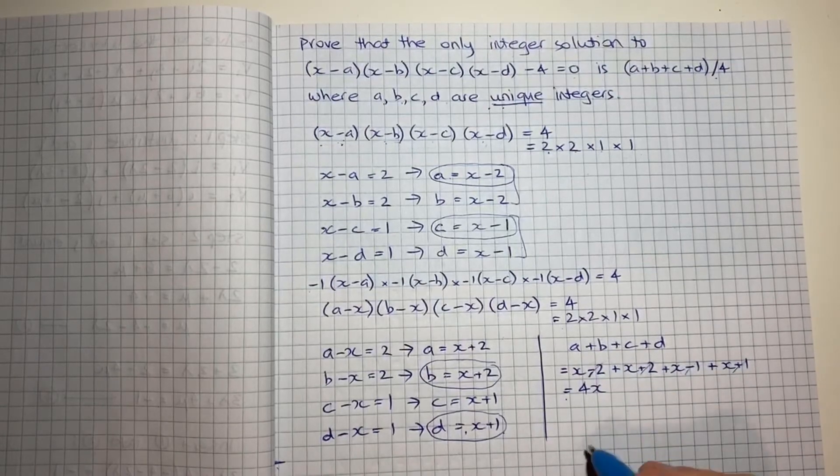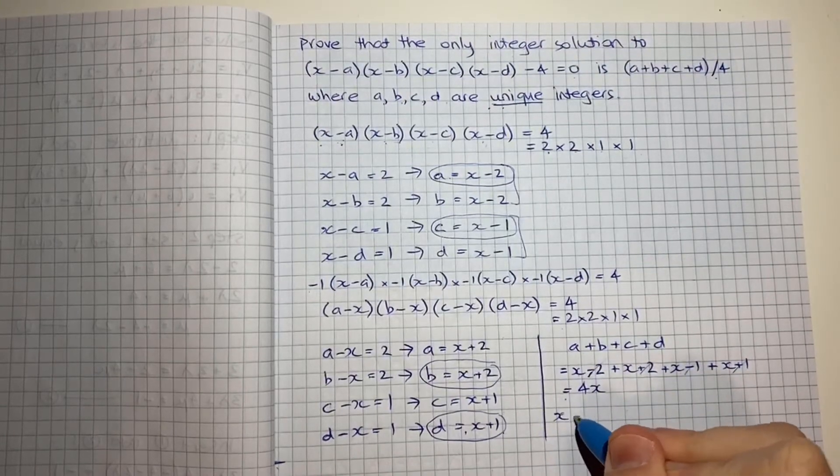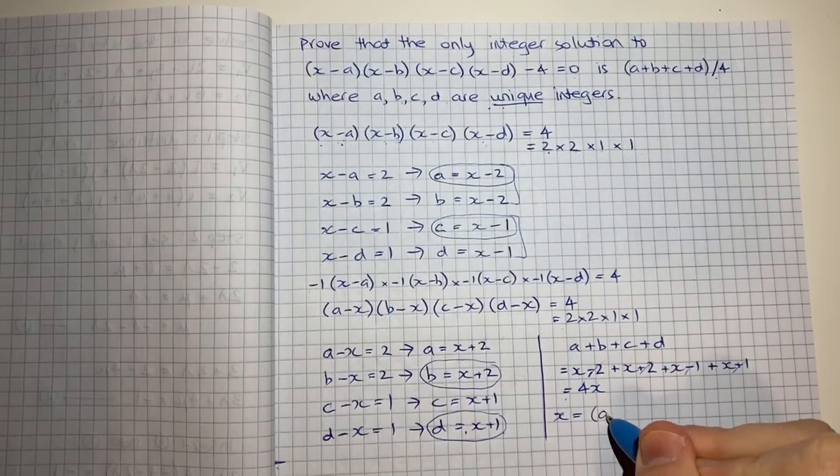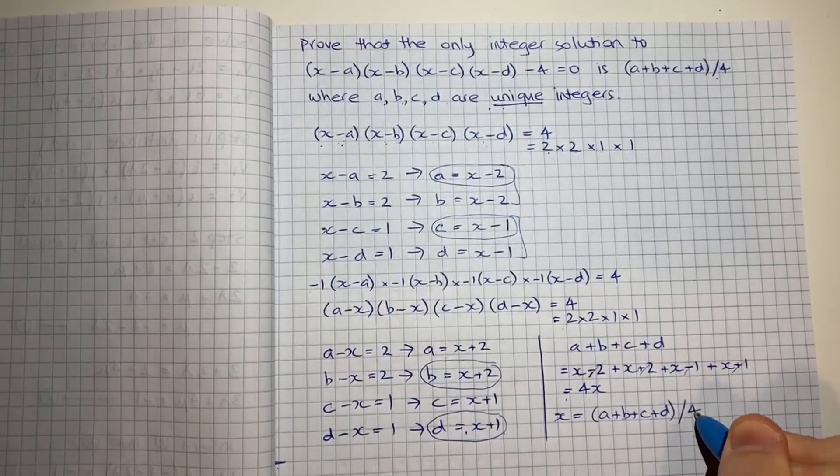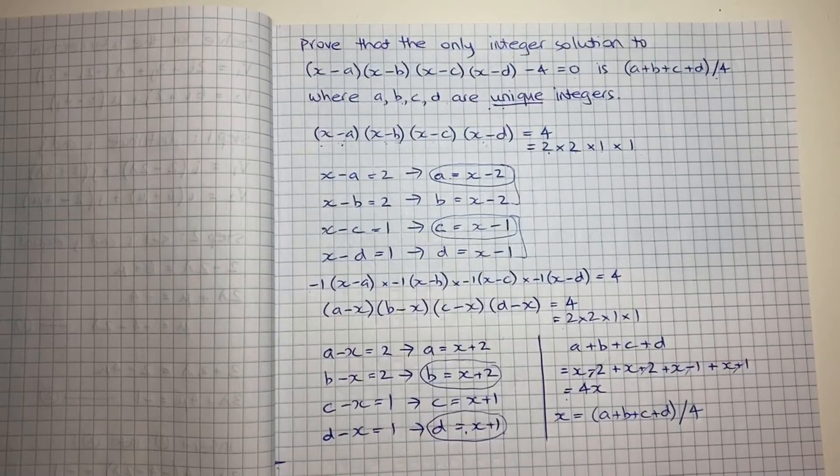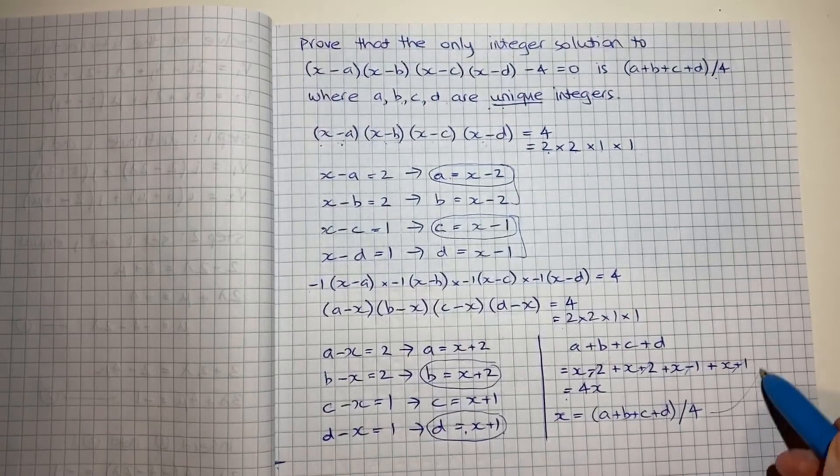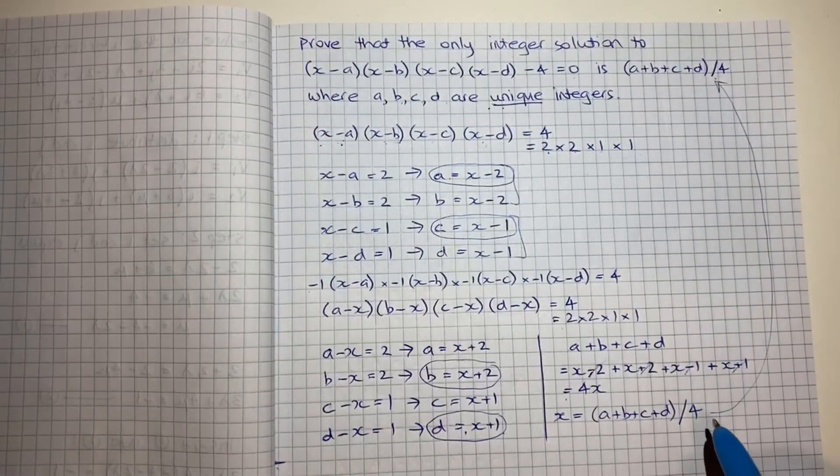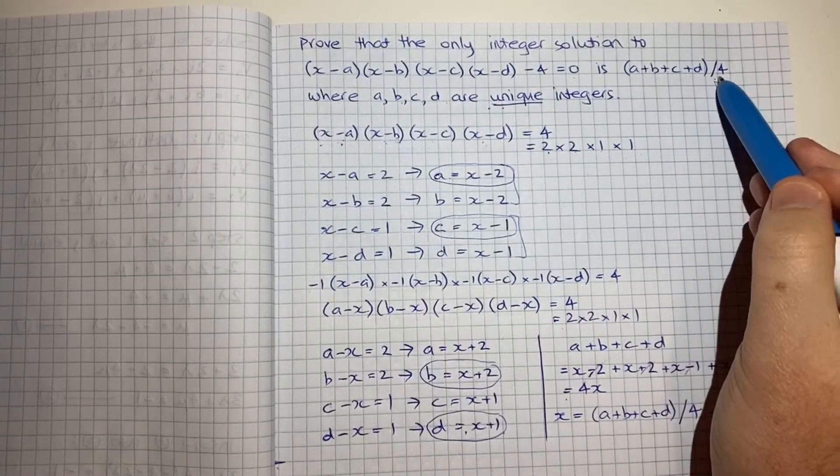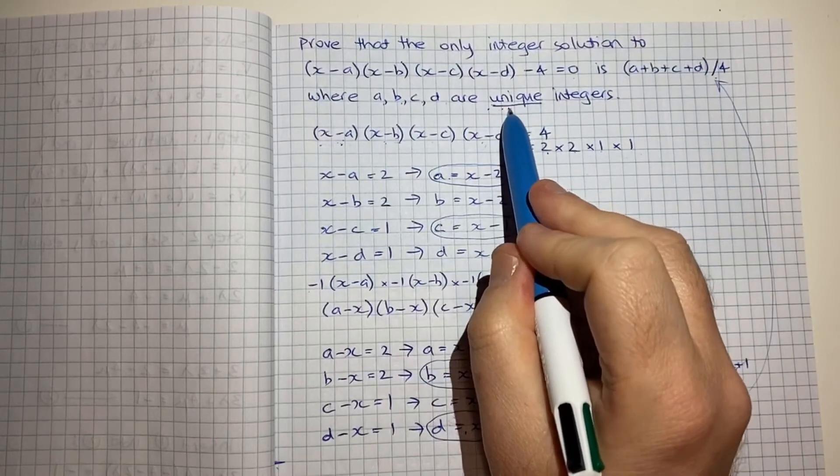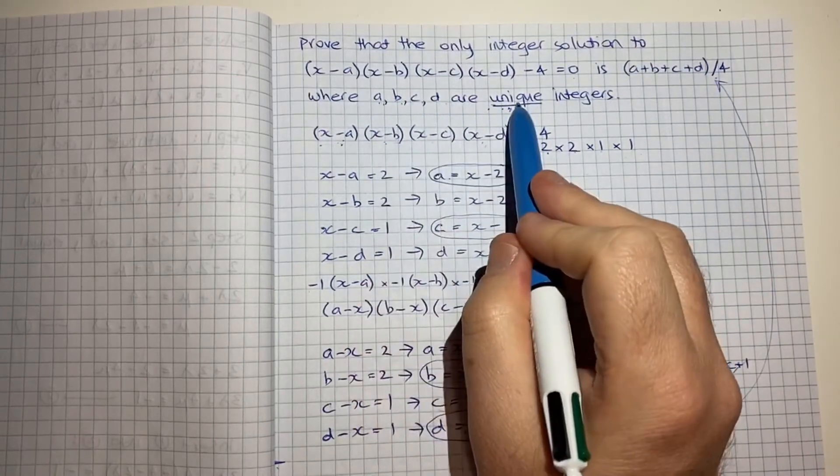So if I rearrange for x here, I get x = (a+b+c+d)/4, which is the criteria that we were told, or is the solution that we were told, is what you get when you have this criteria that a, b, c and d are unique.